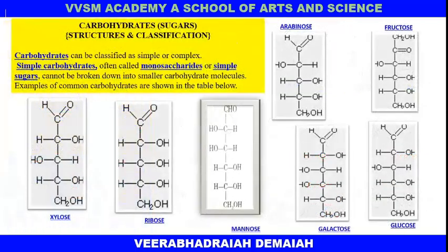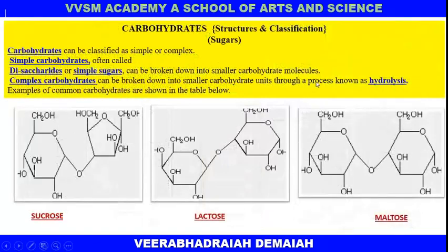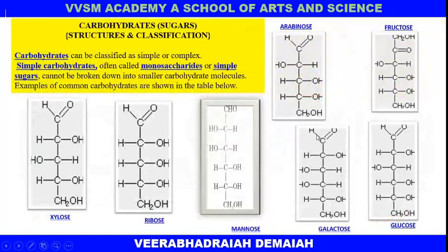Looking at carbohydrate sugar structures and classification: arabinose consists of five carbon atoms — it is a pentose. Fructose, galactose, and glucose are hexoses because they contain six carbon atoms; hexa means six.